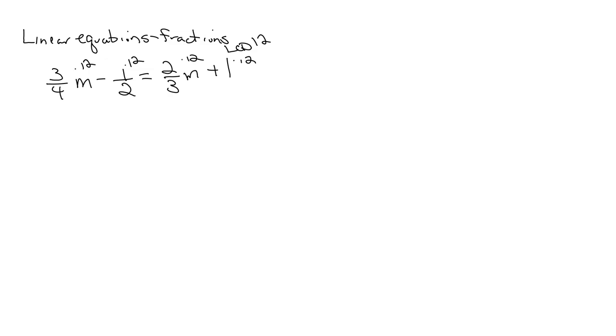And here's why. What's going to happen? 4 goes into 12 three times. Since I'm multiplying, this becomes 9m minus. 2 goes into 12 six times, this becomes a 6. 3 goes into 12 four times. Multiplying 8m plus 1 times 12, which is 12.